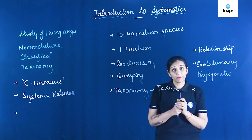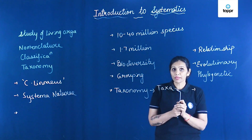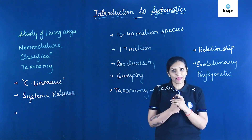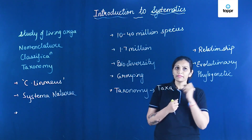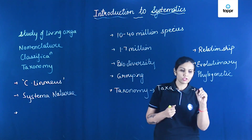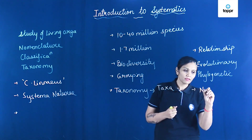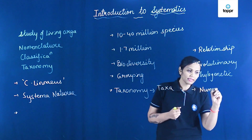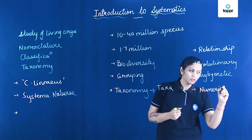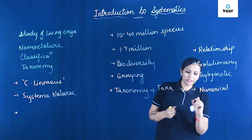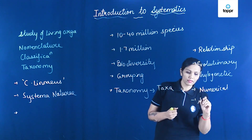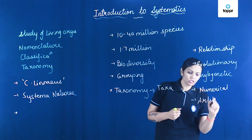Systematics can also provide information about biochemistry, numerical taxonomy, artificial taxonomy, and phylogenetic classification.